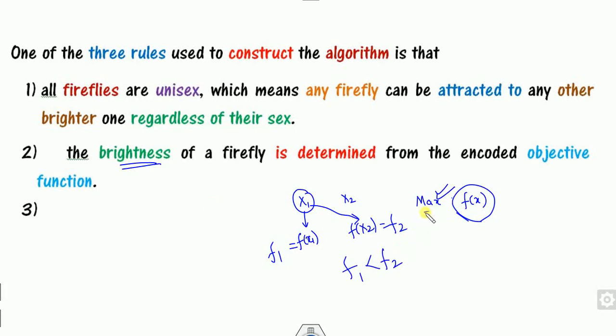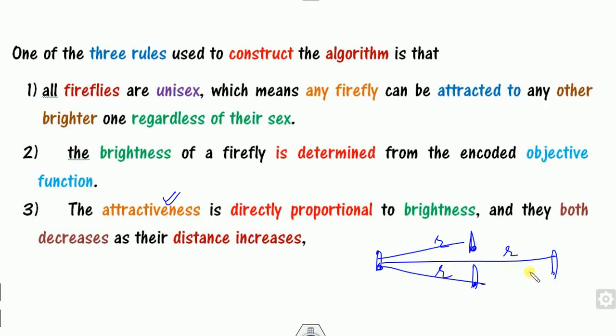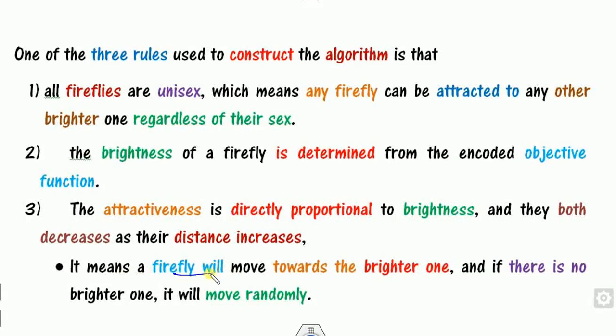Remember that brightness corresponds to the objective function. The third rule is attractiveness: how attractive fireflies are is directly proportional to brightness. As fireflies move further away, the brightness decreases with distance. If a firefly is very far away and there is no brighter one visible, then it will move randomly to any other firefly.